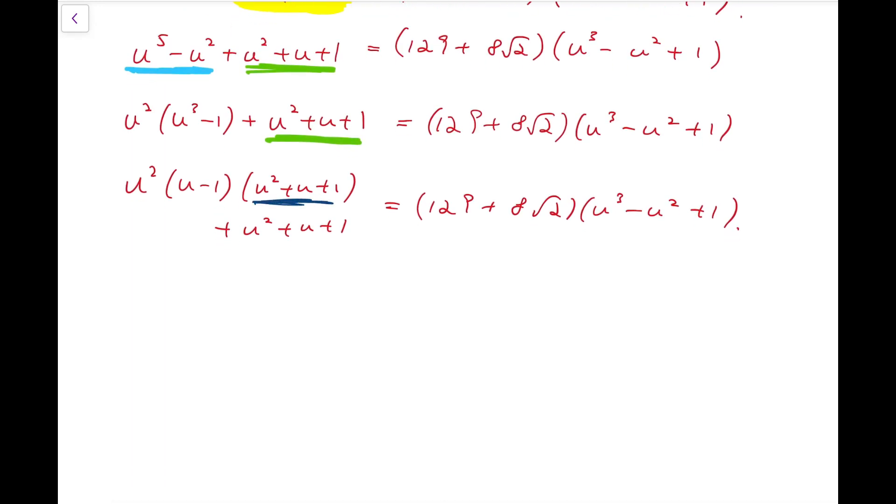Now there is a common factor on the left-hand side, which is u squared plus u plus 1. And what remains, I'll check exactly u cubed minus u squared plus 1.